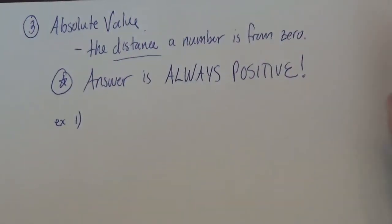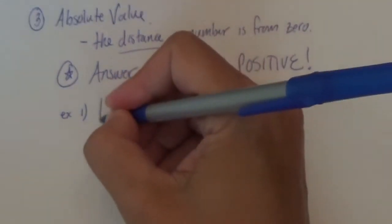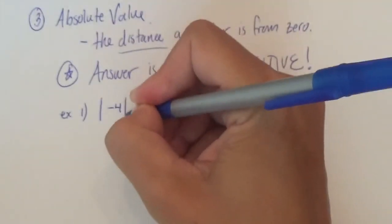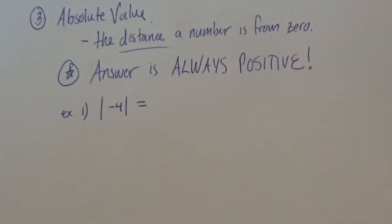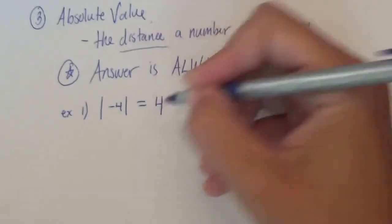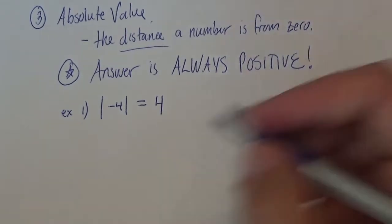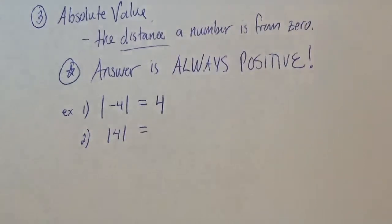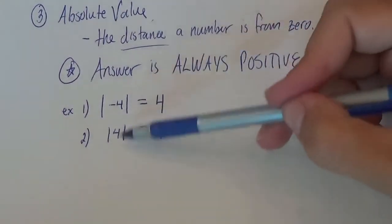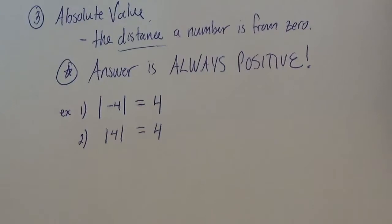So what does this look like? Example 1. So what they do is they put the number in what they call absolute value bars. So they'll say the absolute value of negative 4 is, and you have to figure it out. So you ask yourself, how far away from zero is negative 4? Well, it's 4 away. So that's your answer. The absolute value of negative 4 is 4. Now if I gave you positive 4 inside the bars, same question. How far away from zero is positive 4? Well, it's 4 away. So two different problems, same answer, because they're the same distance just on opposite sides.